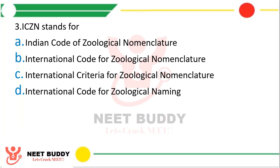Question 3. ICZN stands for: Option A, Indian Code of Zoological Nomenclature; Option B, International Code of Zoological Nomenclature; Option C, International Criteria for Zoological Nomenclature; or Option D, International Code for Zoological Naming. The correct answer is Option B, International Code of Zoological Nomenclature.